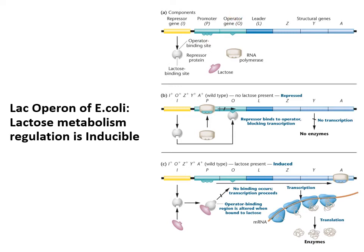When you think of this lac operon, if there is no lactose present — as shown in this figure — then you don't need these enzymes; it would be a waste. So what happens is the repressor is bound to the operator. When you have this big bulky protein bound there, the RNA polymerase that binds at the promoter can't make it through this area to get to the genes to express them. So this operon is repressed — transcription cannot occur because a repressor molecule is blocking the RNA polymerase.